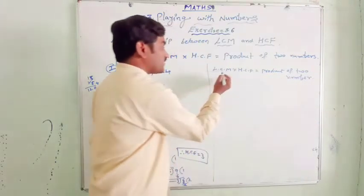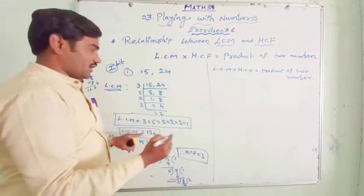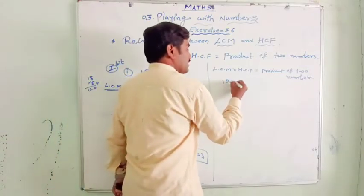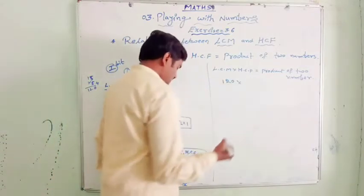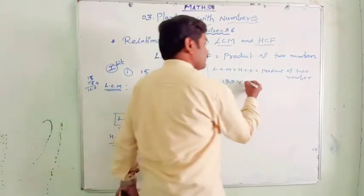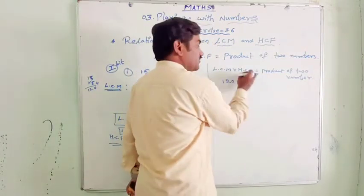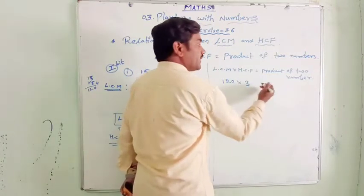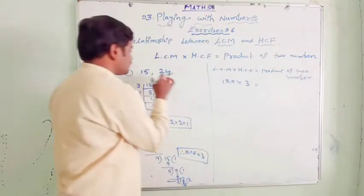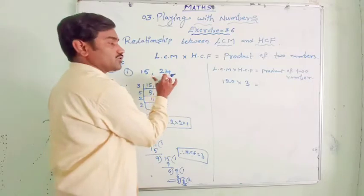Let us check the relation: LCM × HCF = product of 2 numbers. LCM of the numbers is 120. HCF of the numbers is 3. The product of the two numbers is 15 × 24.